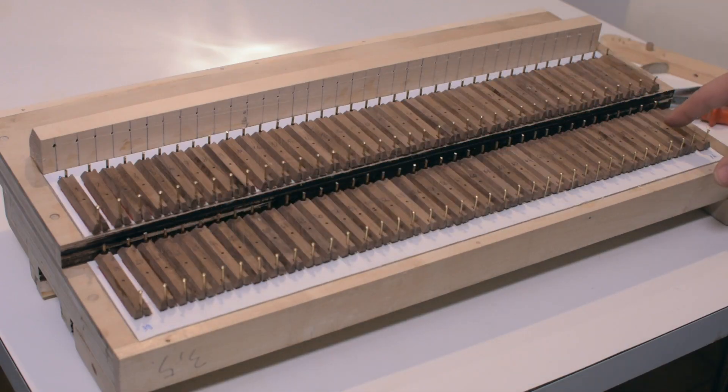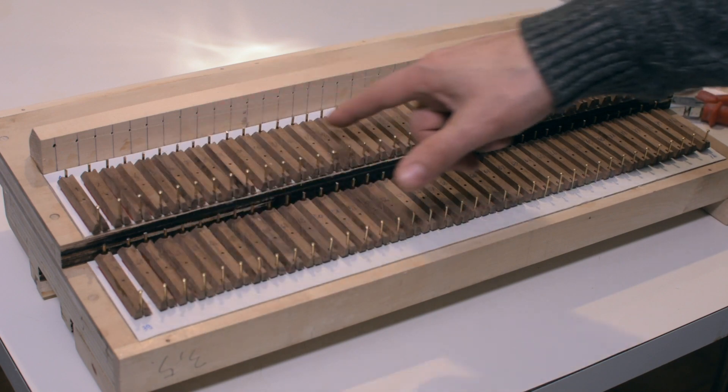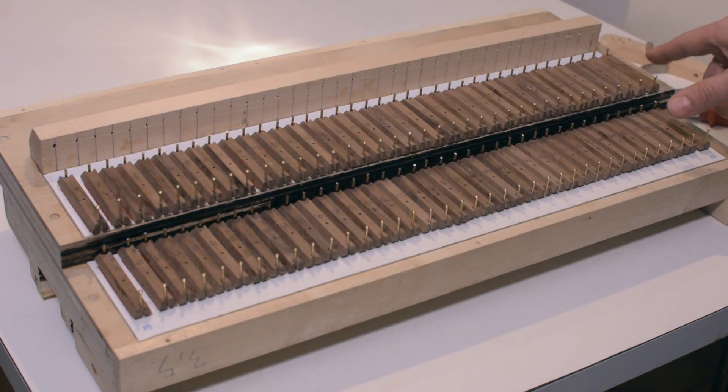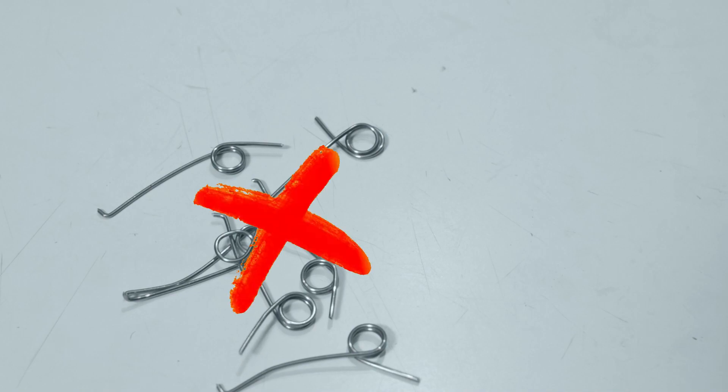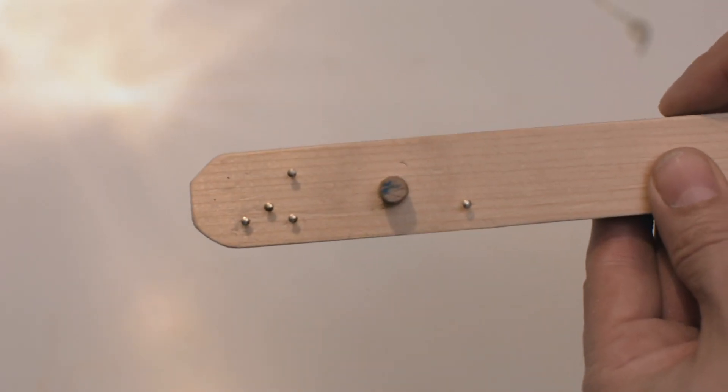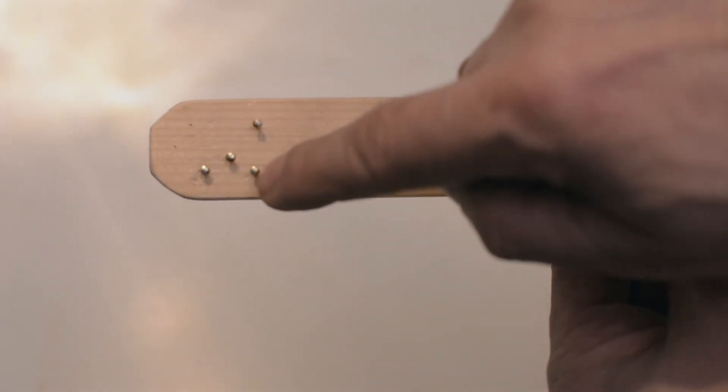For these pallets I will install classic springs, while for this I have to create a different shape. After various attempts gone wrong, I found the right shape. Furthermore, to make them all the same, I built this jig.